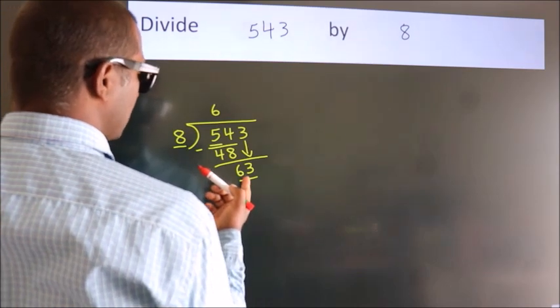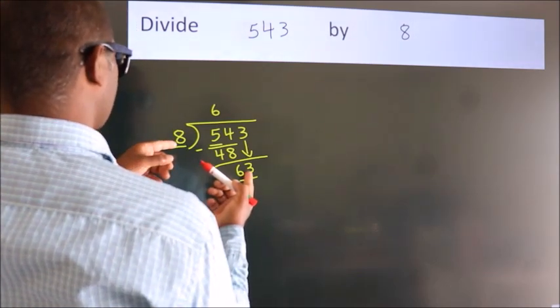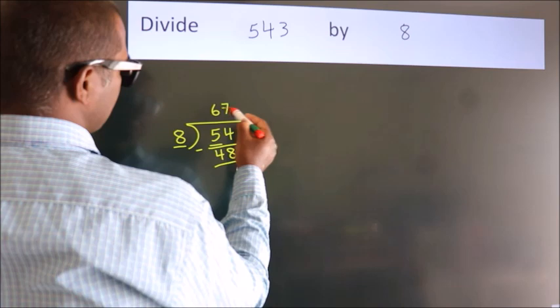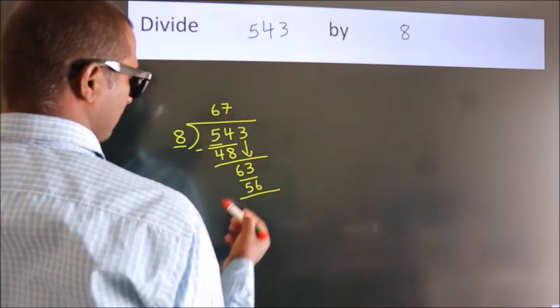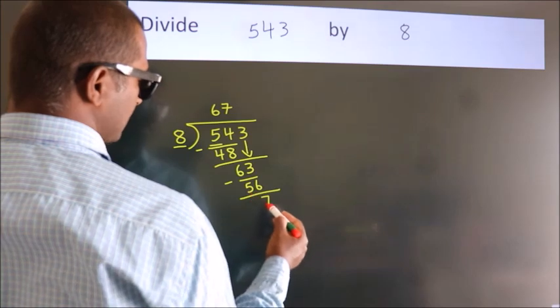A number close to 63 in the 8 table is 8 times 7 equals 56. Now we subtract. We get 7.